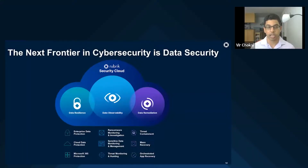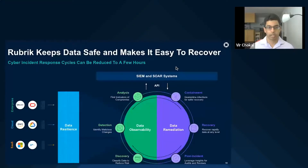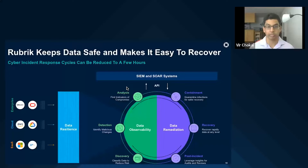Zooming out, Rubrik Security Cloud is the solution that lets you secure your data wherever it lives — across enterprise, cloud, and SaaS. There's also the Data Security Command Center, which provides continuous monitoring and risk scoring of your environment, identifies security gaps, quantifies data risks, and provides actionable recommendations to improve your data security posture on a continuous basis. Rubrik also integrates with commonly used security tools like SIEM and SOAR solutions, so security teams can listen for alerts from Rubrik and invoke Rubrik workflows — such as threat hunting or recovery — without leaving their existing security interface.